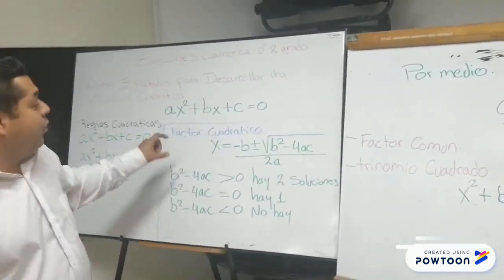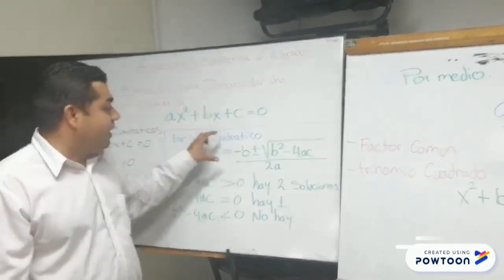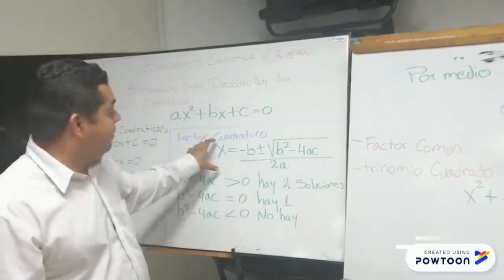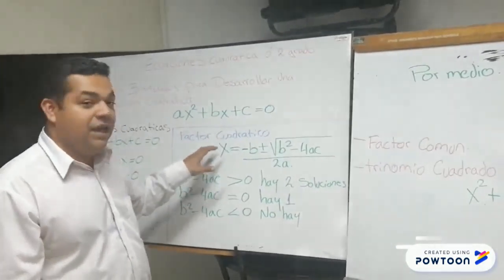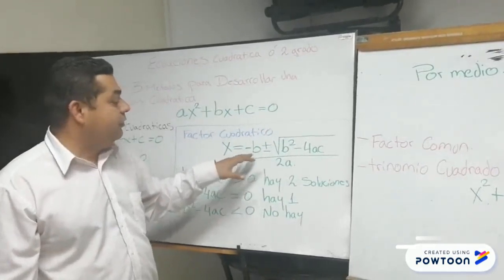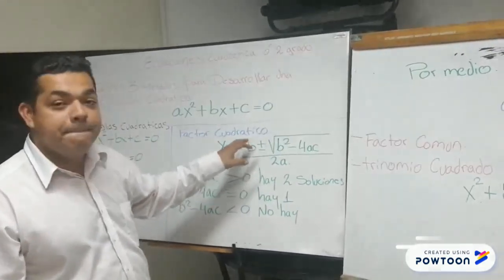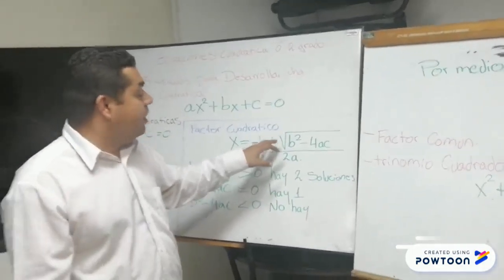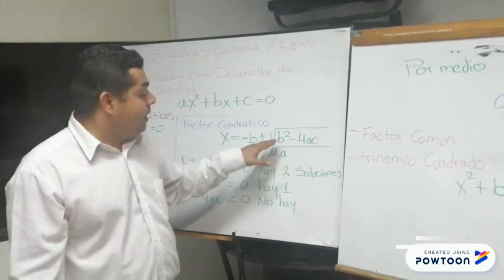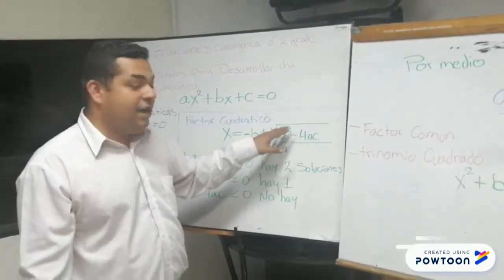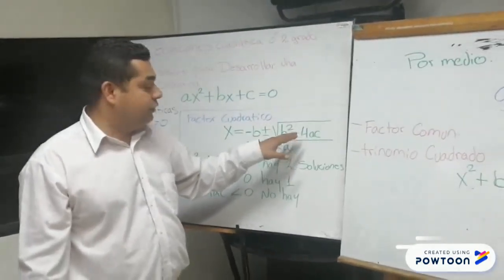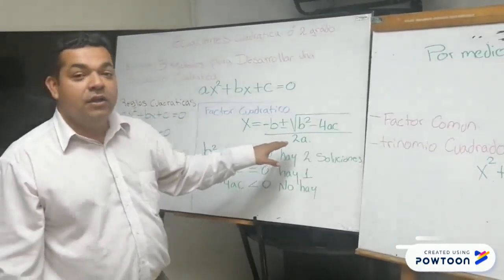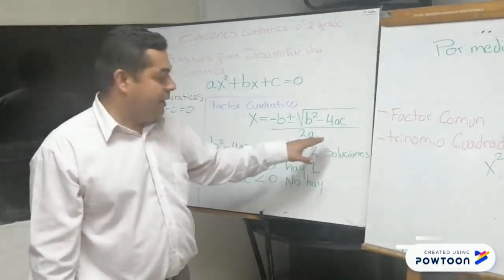Por el método del factor cuadrático, tenemos la siguiente fórmula: X es igual a menos B más o menos raíz cuadrada de B² menos 4AC, sobre 2A.